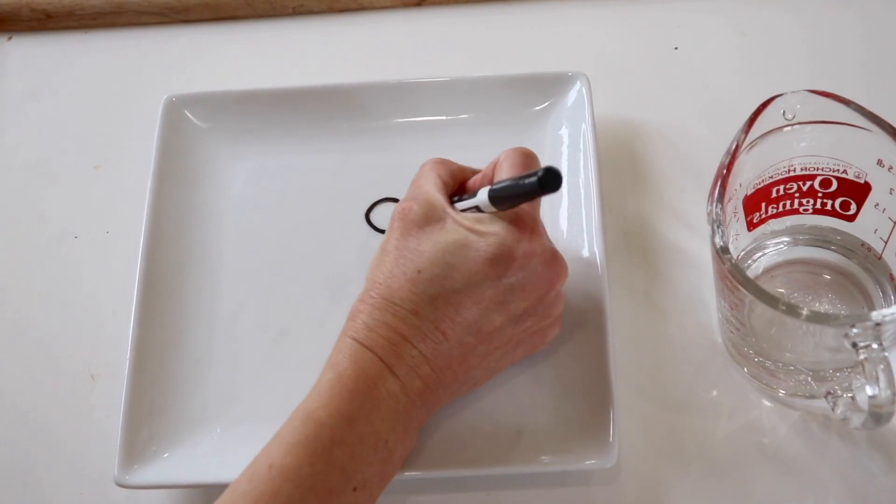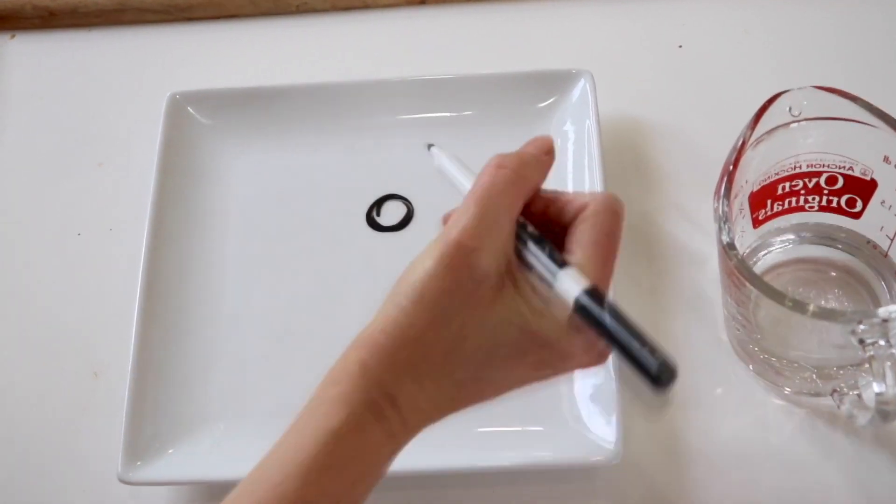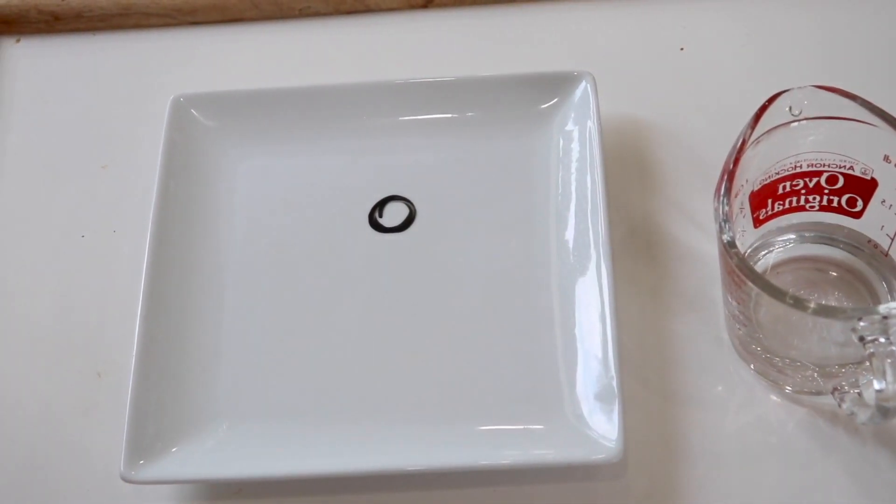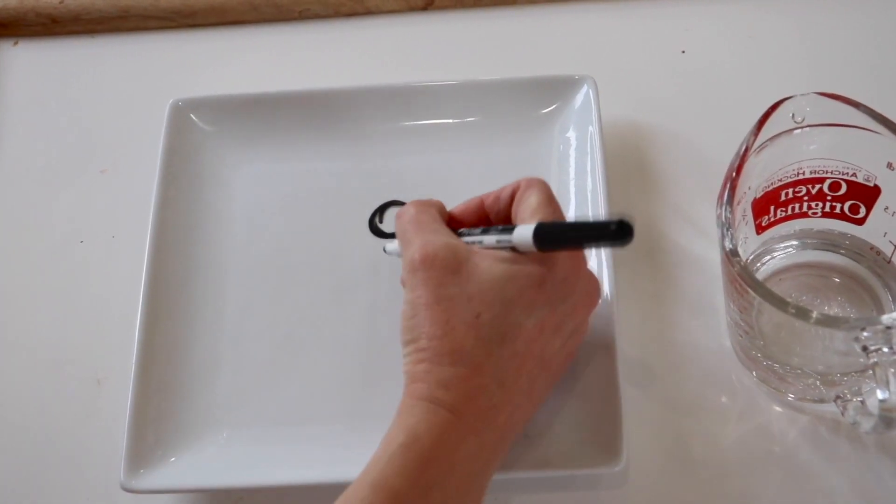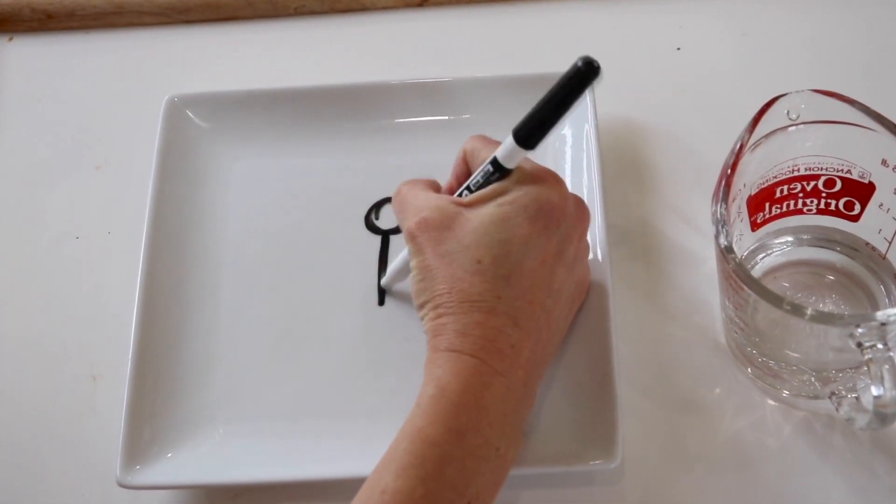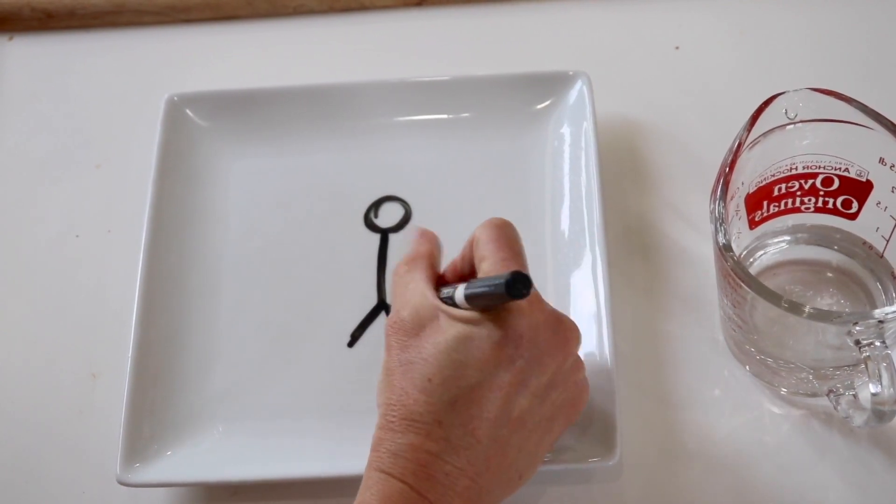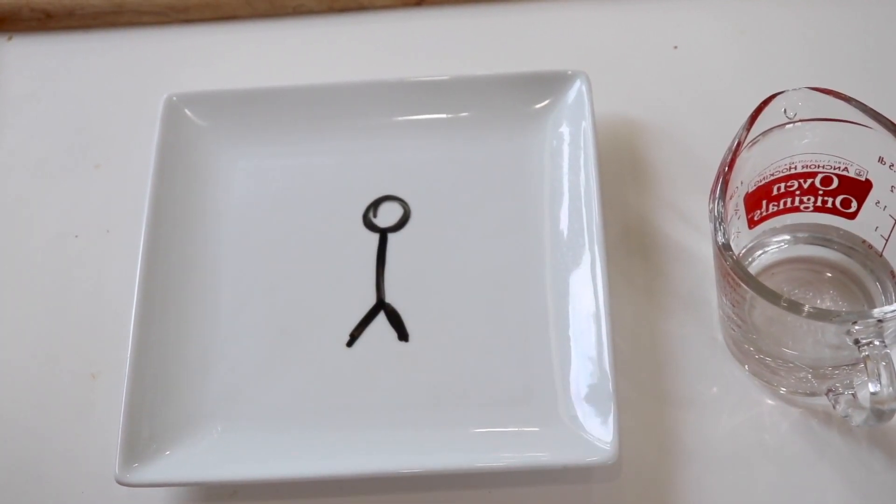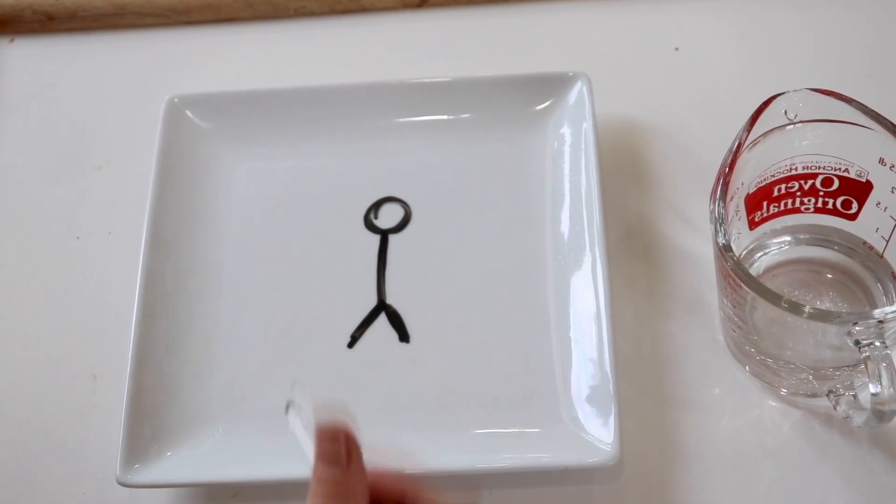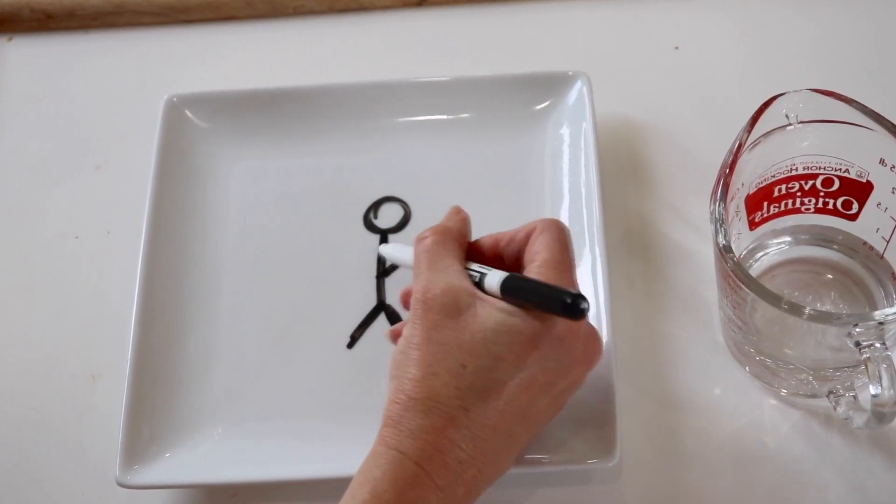I'm going to give him a head. What shape is his head? Yeah, it's a circle. And he needs a body. Two legs. Hmm, what is he missing? That's right, two arms.